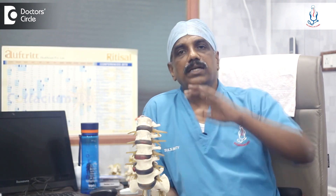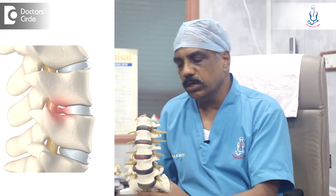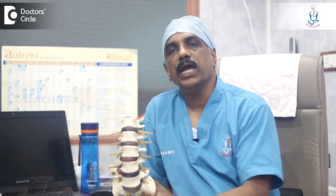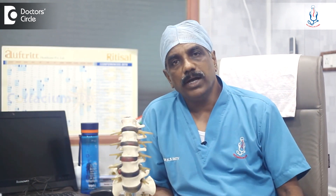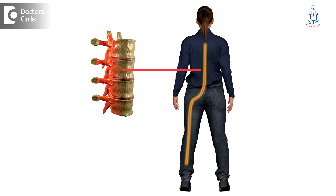Sometimes, because the disc is degenerated, a person suddenly bends forward or suddenly twists, and the disc can get torn. Once the disc gets torn, it comes out and presses upon the nerves, producing nerve pain. The patient may have pain along the buttocks, back of the thigh, front of the thigh, lower leg, or foot — a running pain from one place to another, also called sciatica.